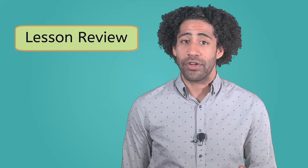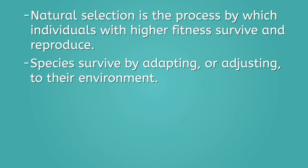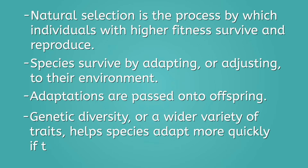So the next time you find yourself observing nature, think about why the living things that you see have the traits that they do. What advantage do those traits provide? Additionally, what differences exist between the members of the same species, and how does that affect the species overall? We have concluded our lesson on natural selection. We've learned that natural selection is the process by which individuals with higher fitness survive and reproduce, species survive by adapting to their environment and these adaptations are passed on to offspring, and genetic diversity — a wider variety of traits — helps species adapt more quickly if their environment changes over time.